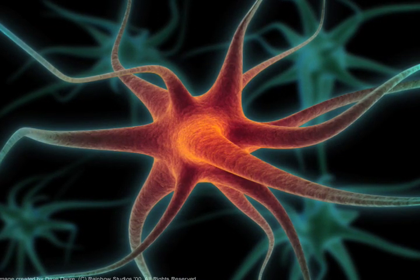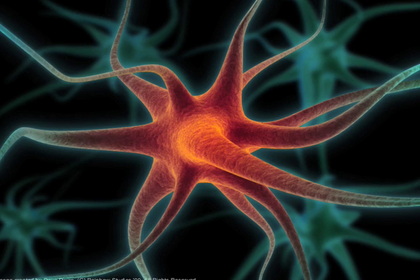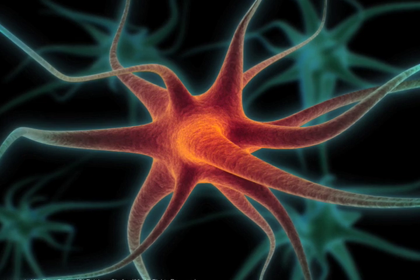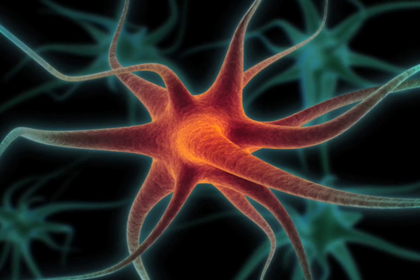The dendrites of a neuron are cellular extensions with many branches. This is where the majority of input to the neuron occurs.